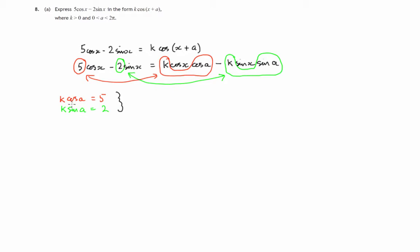First of all, let's find the angle a by dividing the second equation by the first one. We know that sine a over cos a is tan a. So k sin a over k cos a will be equal to 2 over 5. k's cancel, sin over cos is tan. So tan a is equal to 2 fifths or 4 tenths, 0.4.